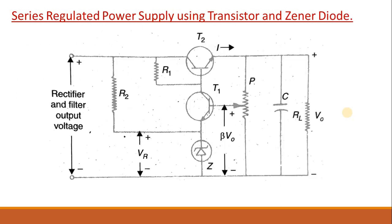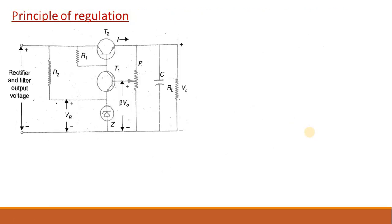So, move on to the series regulated power supply. This is the simple circuit diagram of how we can use transistor and Zener diode to construct a regulated power supply. We need two transistors T1, T2, a potentiometer and a Zener diode. These elements are connected across the load in this configuration. Now, the question is, how this circuit is working as a regulator? Let's discuss the principle of this regulation.